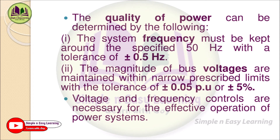From load frequency control to system planning, this forms the hierarchical control structure of the power system — lower order and higher order controls. The two main quantities that decide power quality are frequency and voltage. System frequency must be kept around the specified 50 Hz with a tolerance of plus or minus 0.5 Hz, meaning frequency is maintained between 49.5 and 50.5 Hz. In practice, Chennai maintains frequency very close to 49.9 Hz, only reaching around 49.7 Hz in emergency cases.